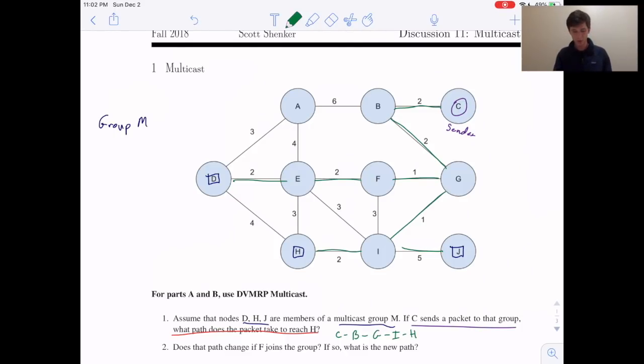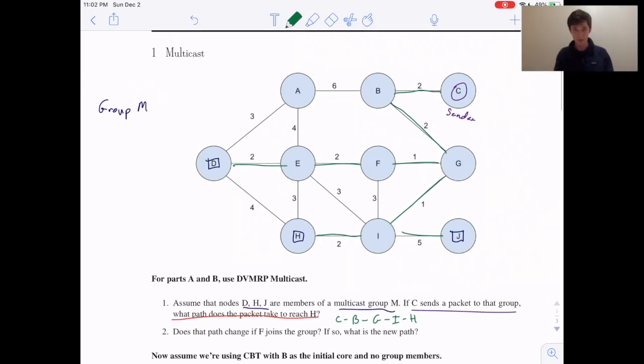Now armed with this information, part two should be easier. So part two asks, does that path change if F joins the group? Well, if the path that a packet takes is the shortest path from that receiver to the sender, adding someone else to our tree, to our group, doesn't affect that path at all. So no. Having F join doesn't at all, in any case, for DVMRP, affect the path that the packet would have taken to get from C to H.